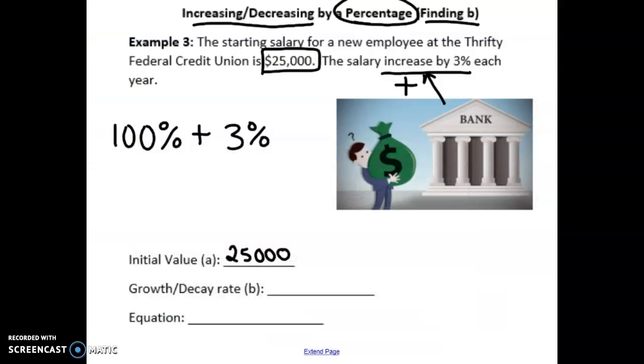Our B value is 1.03. It is clearly a growth, because it's bigger than 1. So our equation then would be y equals 25,000, parentheses, 1.03 raised to the x power.